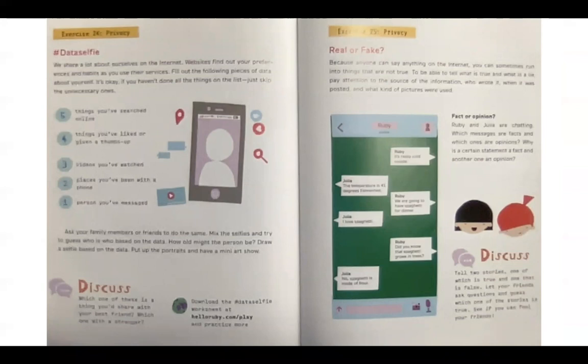Five things you've searched online. Four things you've liked or given a thumbs up. Three videos you've watched. Two places you've been with a phone. And one person you've messaged. Ask your family members or friends. Do the same. Mix the selfies and try to guess who is who based on the data. How old might the person be? Draw a selfie based on the data. Put up your portraits and have a mini art show.